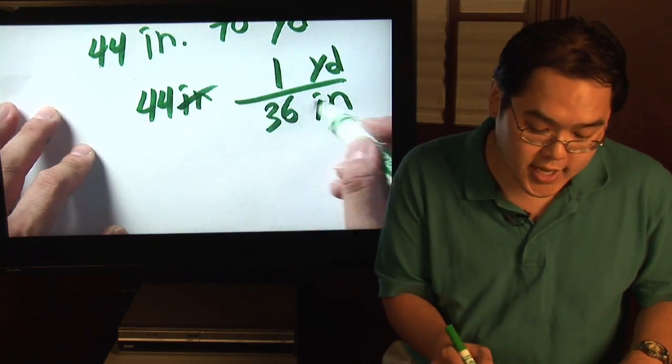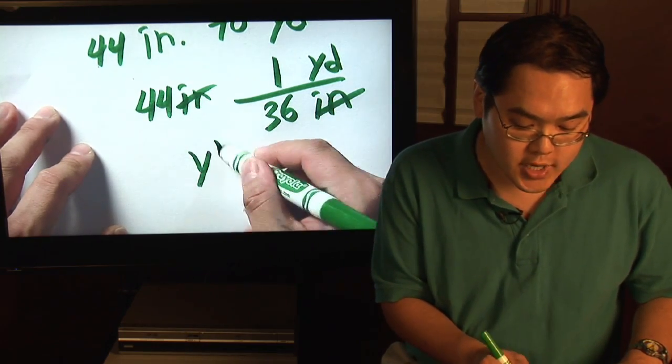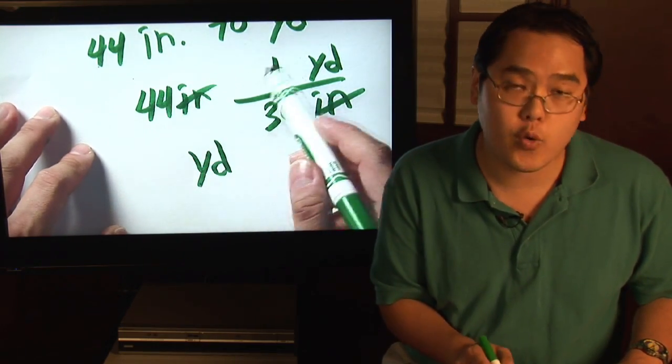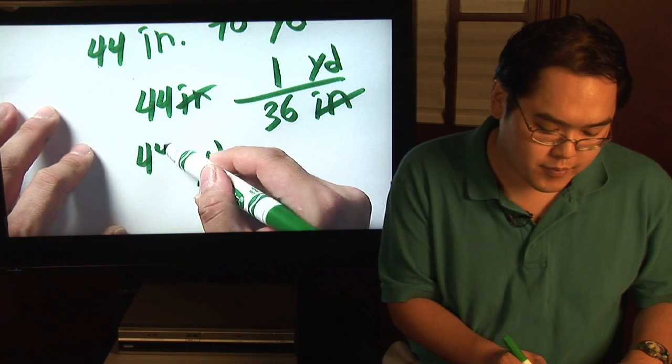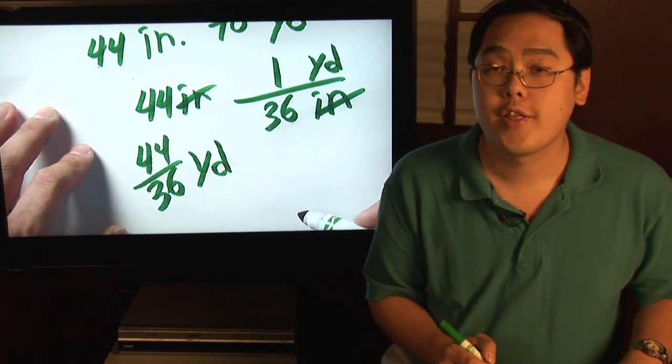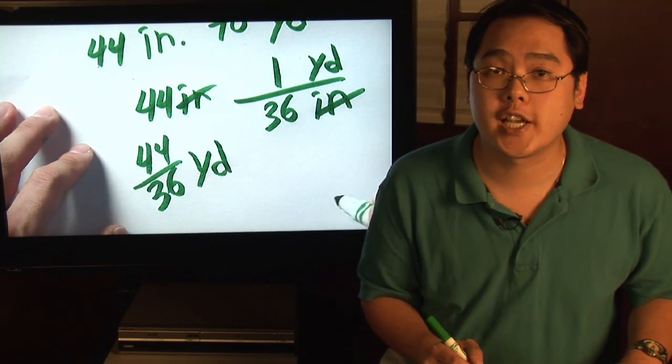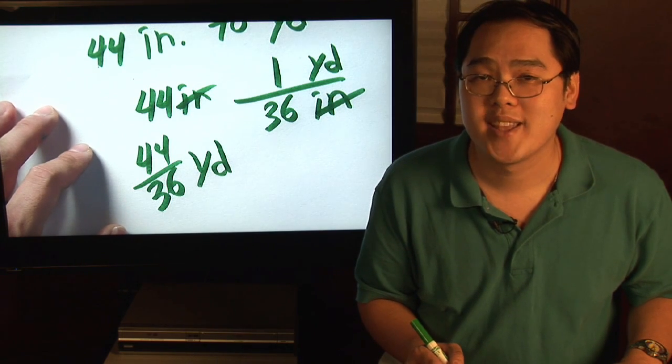So as a result, the inches will cancel, you're left with yards, just multiply across. 44 times 1, 44 over 36. Again, looks like it's reducible and I'll let you do that.